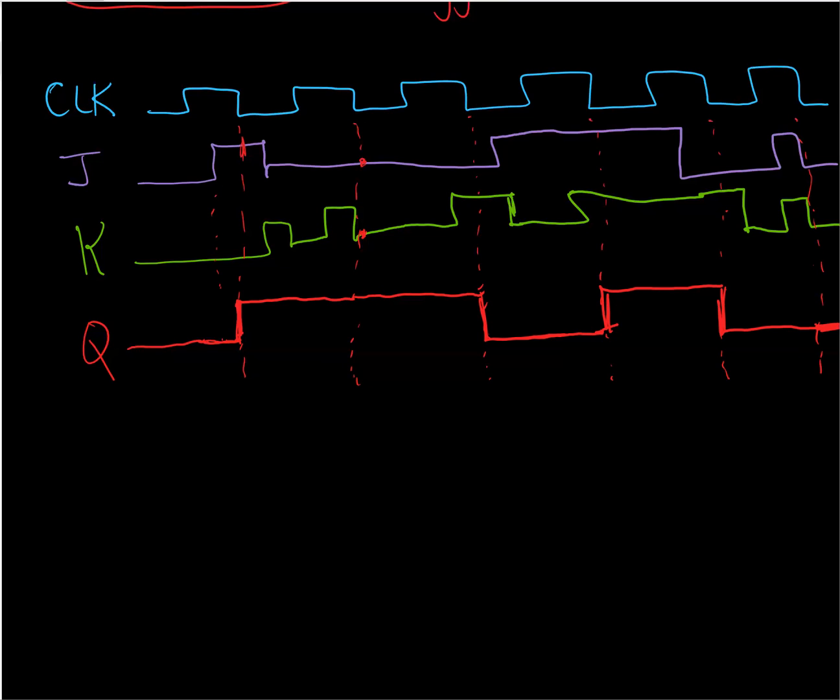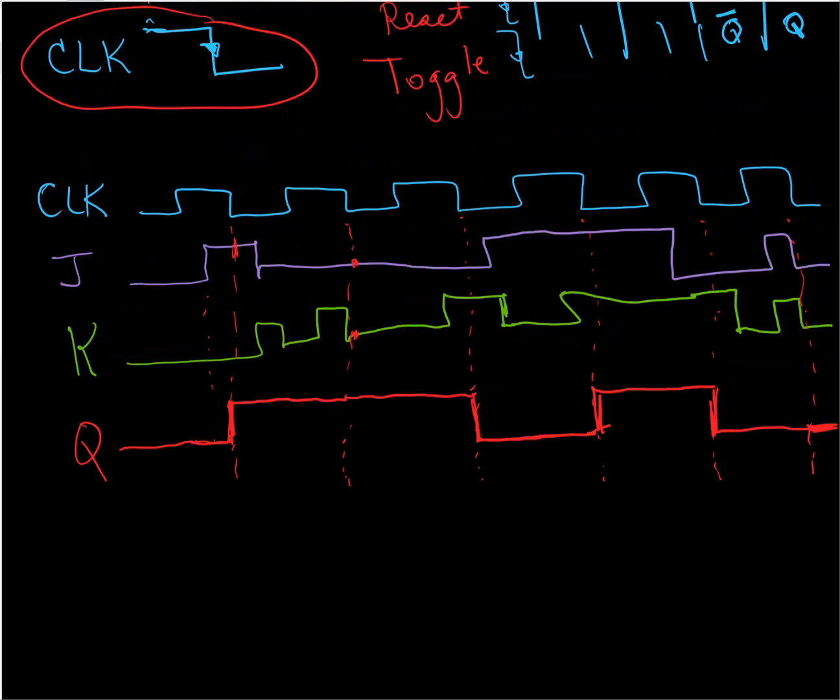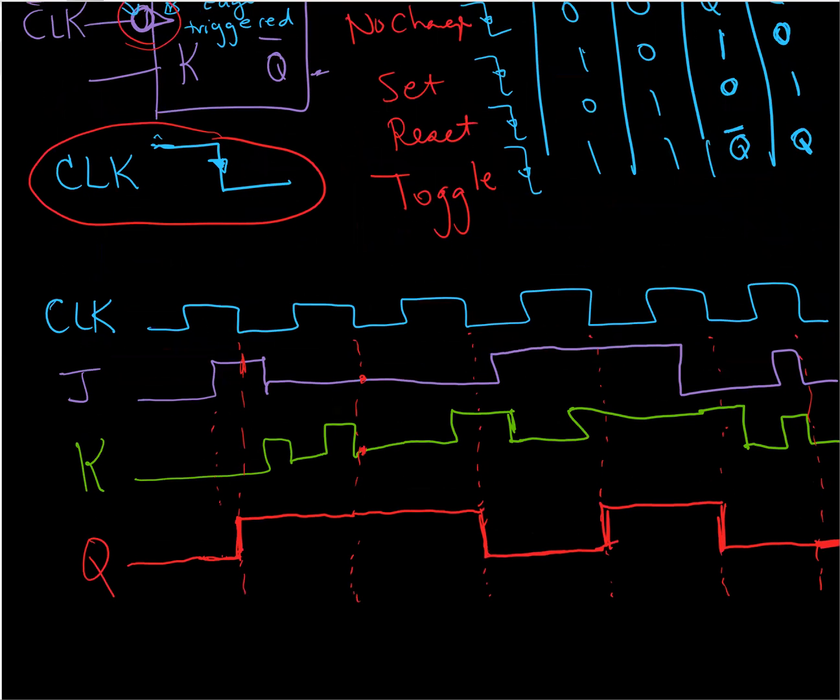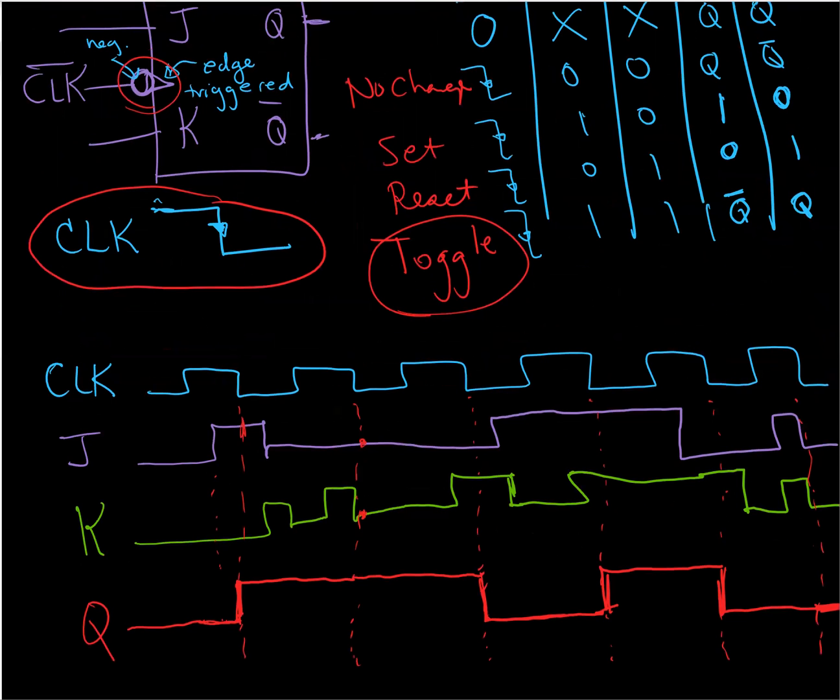So you can see that in between the falling edges of the clock, Q is not responding to the JK inputs. It's only at that falling edge transition where whatever J and K are at that moment of time is considered. And remember that the JK flip-flop has this nifty toggle state where if J and K are both one, the outputs will become the opposite of whatever they were.